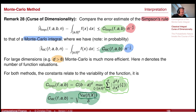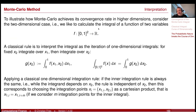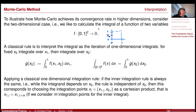So how do we get the result that there is no dimension in the convergence rate? This is related to the probabilistic nature. Consider the following case: a function in two dimensions that we integrate on the unit cube from 0 to 1. Consider the iterated integrals — define g(x2) by fixing x2 and integrating over x1. This gives a one-dimensional integral.